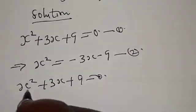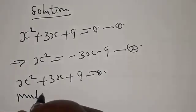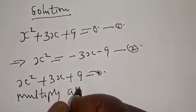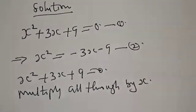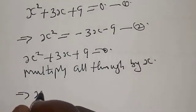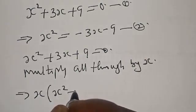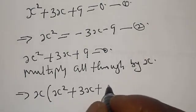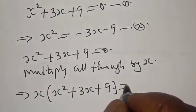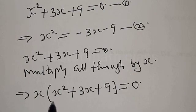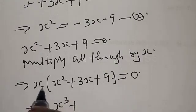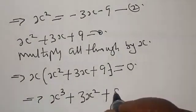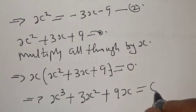From equation 1, let's multiply all through by s. This implies that we have s times s squared plus 3s plus 9 equals 0, which gives us s cubed plus 3s squared plus 9s is equal to 0.